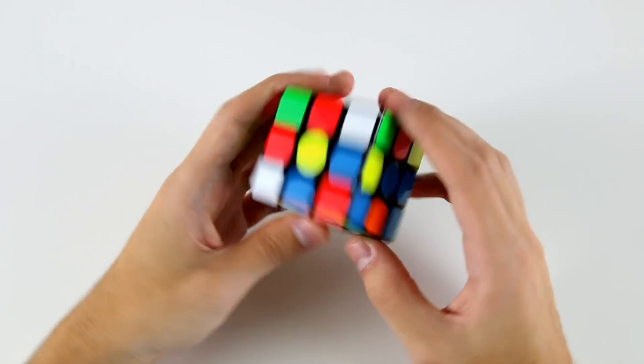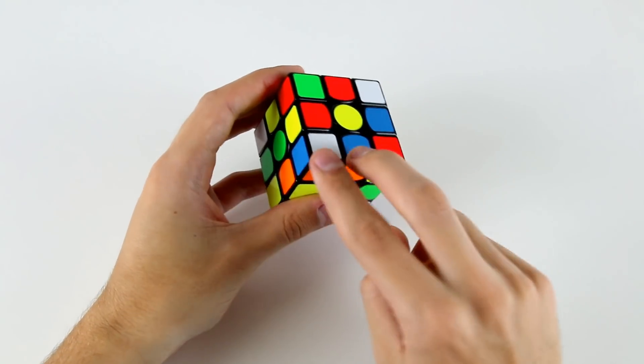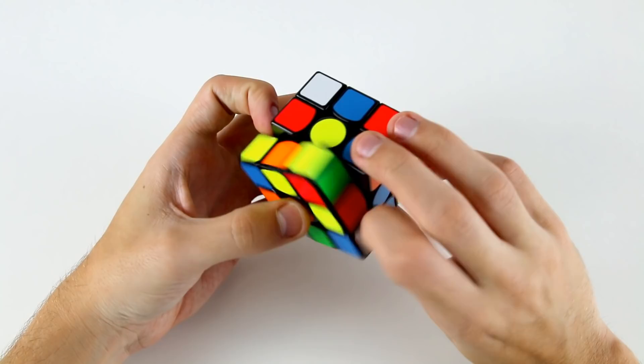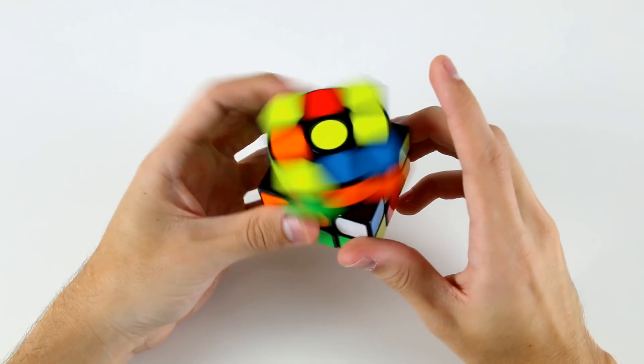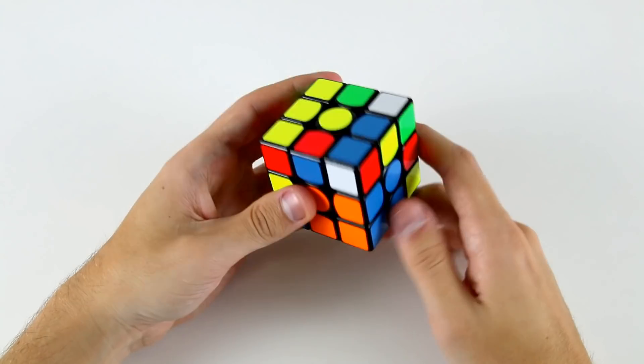Now we need to figure out which F2L pair that we're going to do first. We can do this one with a simple kind of algorithm. We can go u', f, u, r, u', r', f', and then insert that one. That's not too bad.